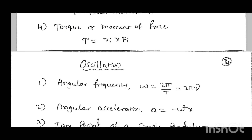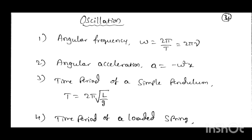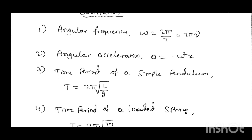Next is Oscillations. The important formulas are: first, angular frequency omega equal to 2 pi by T, which also equals 2 pi times frequency nu. Next, angular acceleration a equal to minus omega squared x. Next, time period of a simple pendulum T equal to 2 pi into root of L by g, where L is the length of the pendulum and g is the acceleration due to gravity.